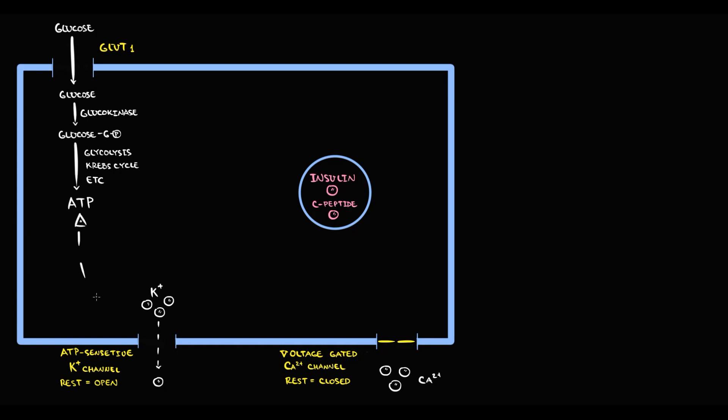ATP molecules activate ATP-sensitive potassium channels. With activation, potassium channels close. If potassium channels close, potassium begins to accumulate inside the cell.